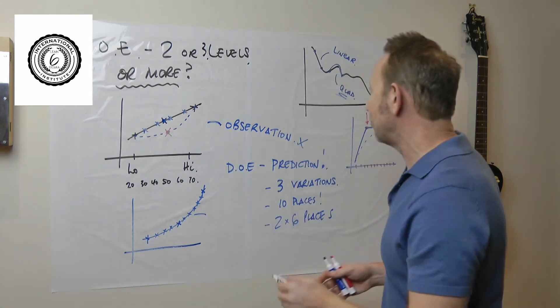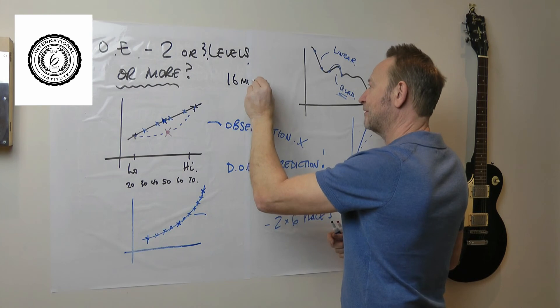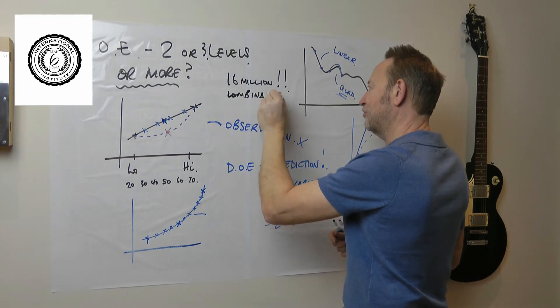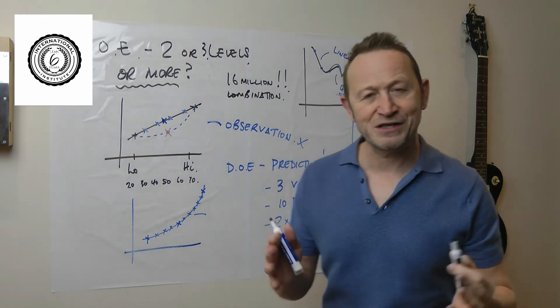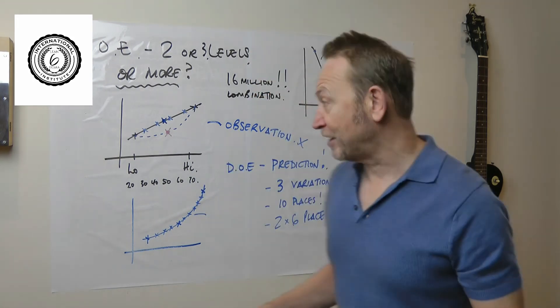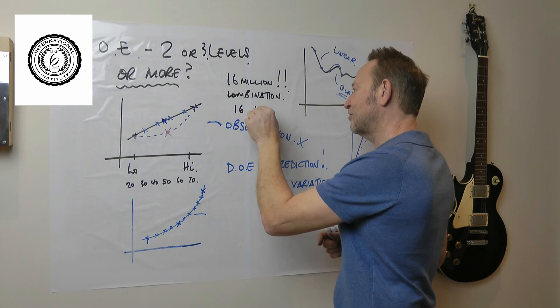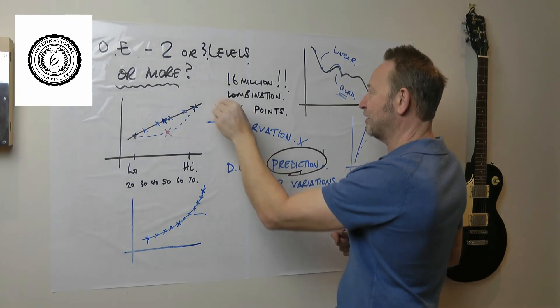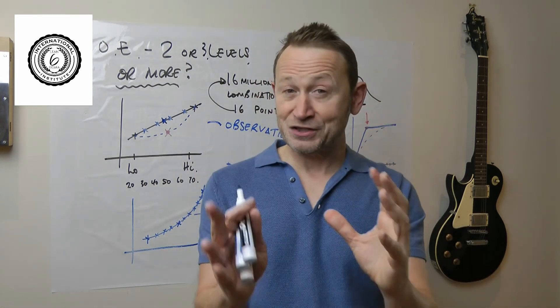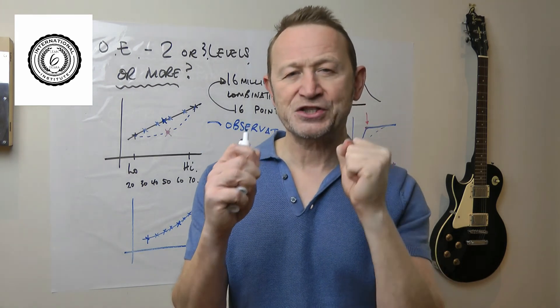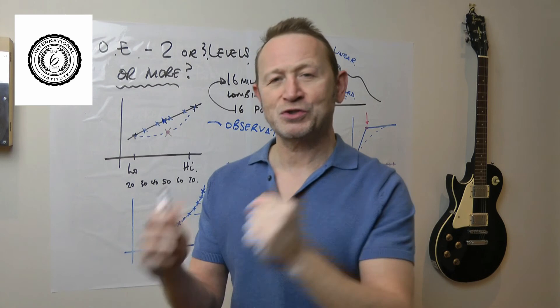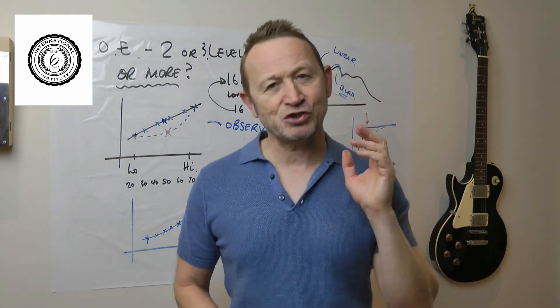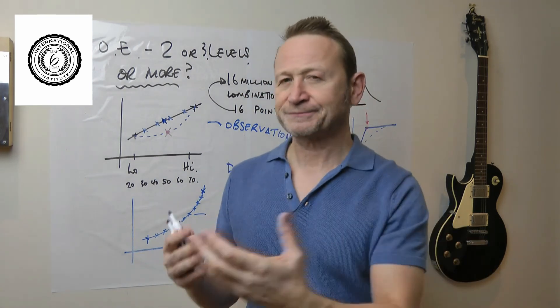So I do some DOEs where there are literally probably lots more than this, but there are literally 16 million combinations that the machine could be set up in. Now we can't do that by observation. We only have to test 16 points. And then what do we do? We predict the points that we haven't been to. That's the power of design of experiments. It's the fastest way to make the most amount of money. So design of experiments, two level or three level really is all you need.